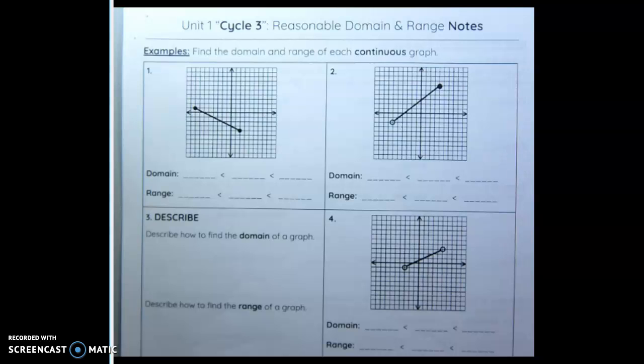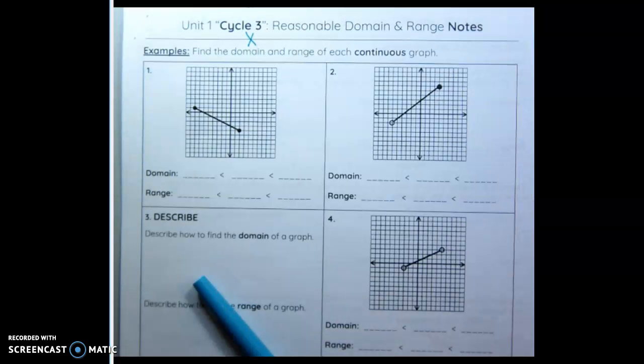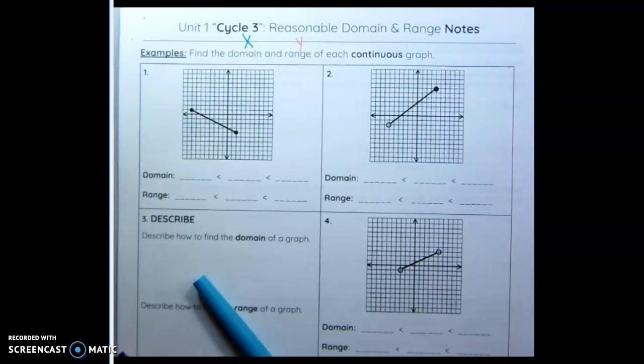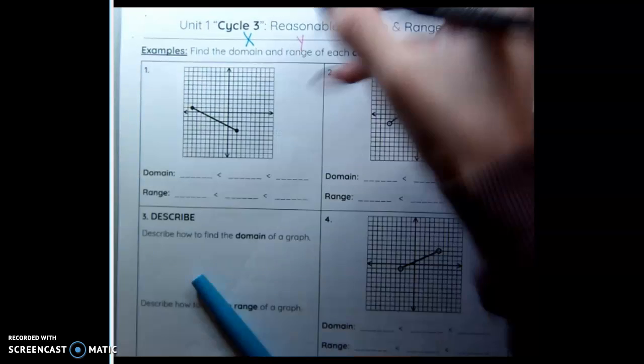Okay, today's fun fact is brought to you by Ms. Woodley. The average lifespan is 28,782 days. This is Unit 1, Cycle 3, reasonable domain and range notes. So our domain is always our x value and our range is always our y value. I'm going to use two colors. Blue is going to be my domain and pink is going to be my range. These are all continuous because they are lines.